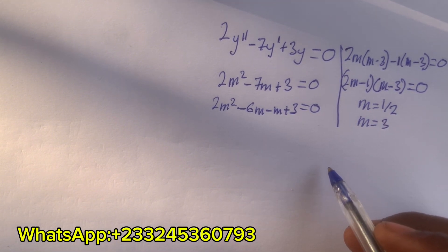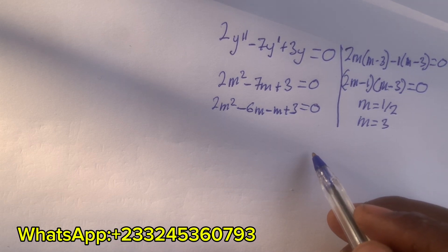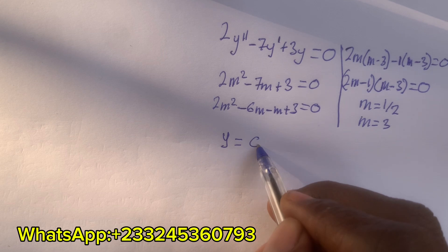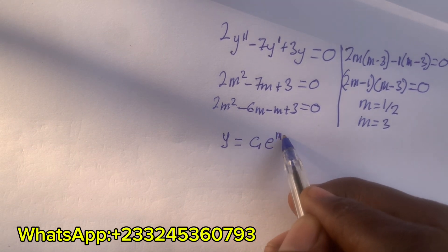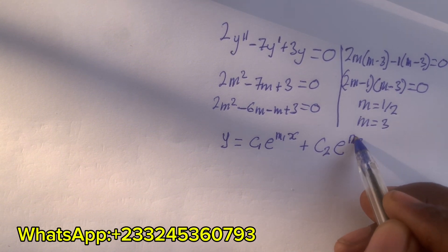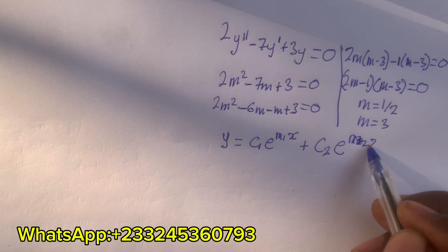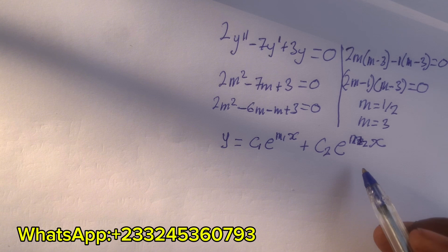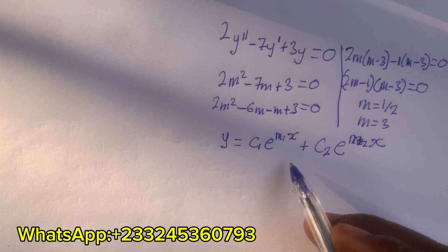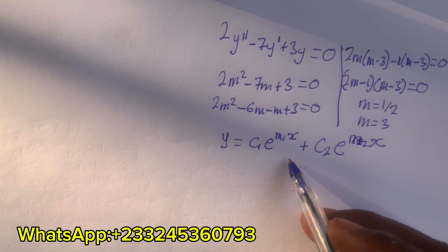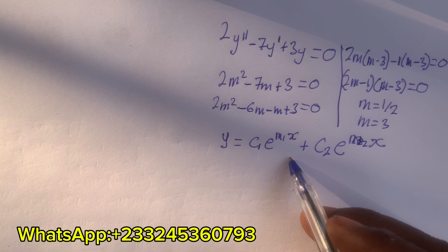What do we write next? First, what we are going to write is the general solution. So we write the general solution as y = c₁e^(m₁x) + c₂e^(m₂x) in a very simple way.